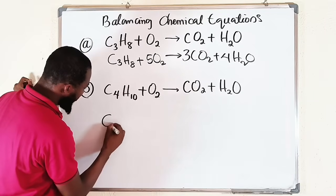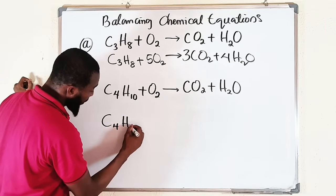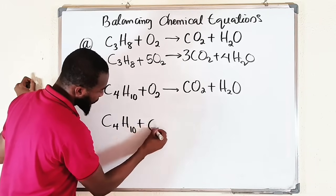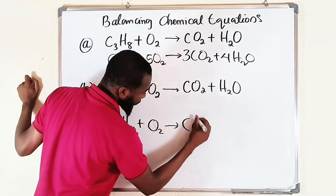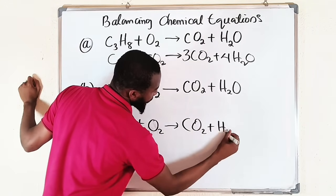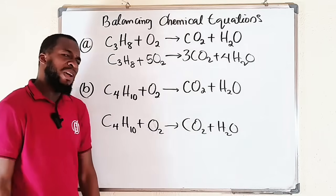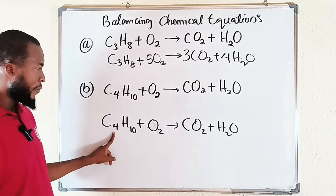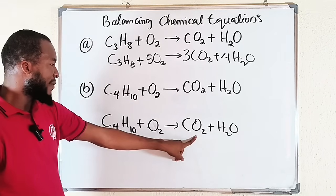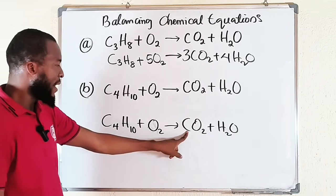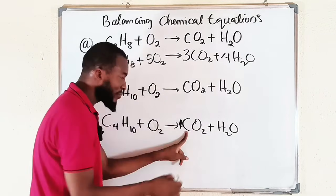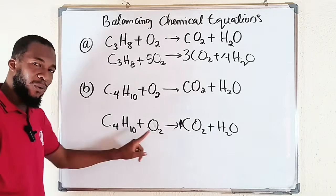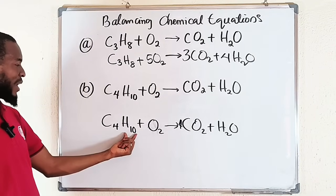Now let's look at the second equation: C₄H₁₀ — this is butane. How many carbon atoms do we have? Four on the left, but only one on the right in CO₂. So we multiply CO₂ by 4. We have now balanced carbon: 4 atoms on each side.